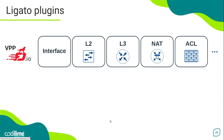For example, the interface plugin allows you to create and manage various types of interfaces available on VPP, such as Software Loopback, TAP, Memif, AF_PACKET, VXLAN tunnel, and many more. When creating an interface of a given type, you can configure its basic parameters such as MAC address, IP address, and so on.